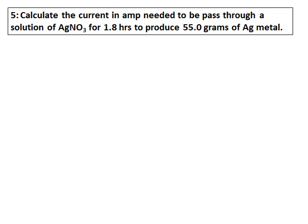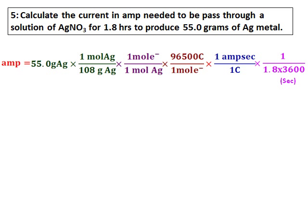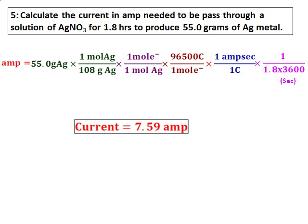Calculate the current in amperes needed to pass through a solution of silver nitrate for 1.0 hour to produce 55 grams of silver metal. Start with 55 grams of silver, convert to moles of silver, then convert moles of silver to moles of electrons, then convert moles of electrons to coulombs. Using the relation that 1 coulomb equals 1 ampere-second, divide by the time in seconds to get the current. The final answer is 7.59 amperes.